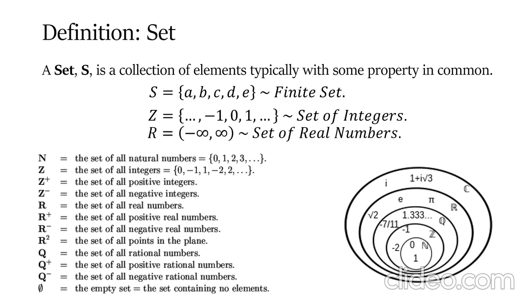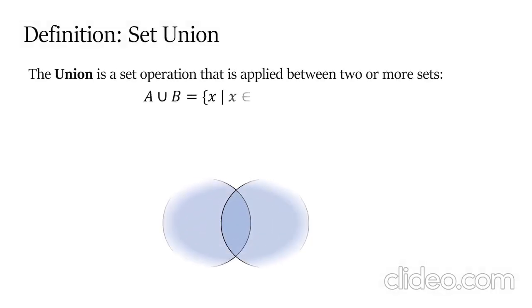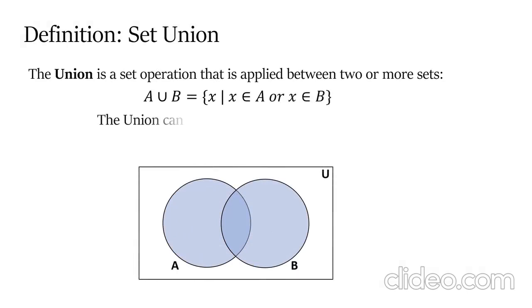Definition: The union is a set operation applied between two or more sets. The union of A and B consists of all elements x such that x belongs to A or B. We can extrapolate the union onto an index set, which is an arbitrary collection of sets.